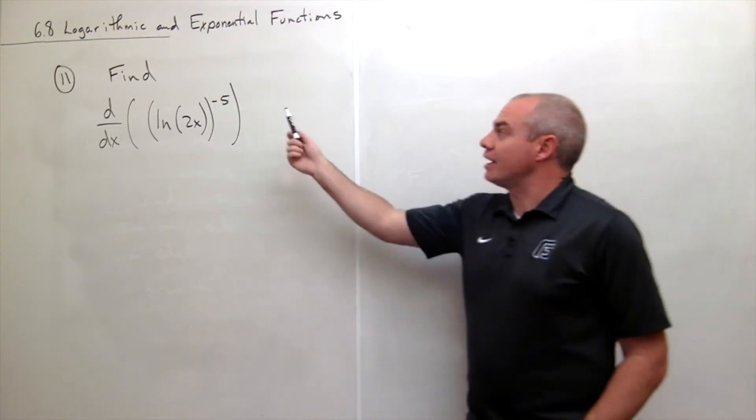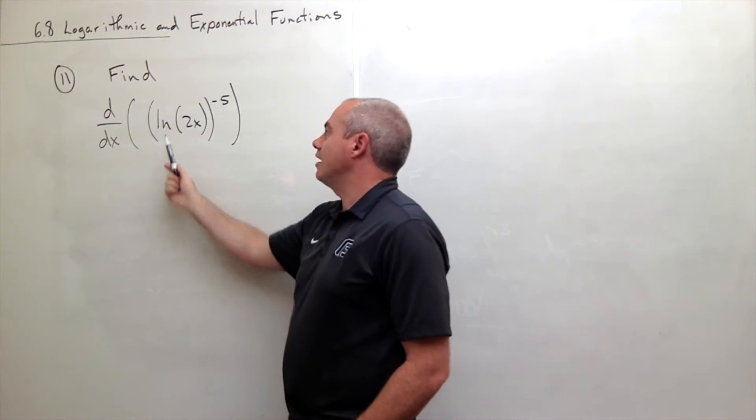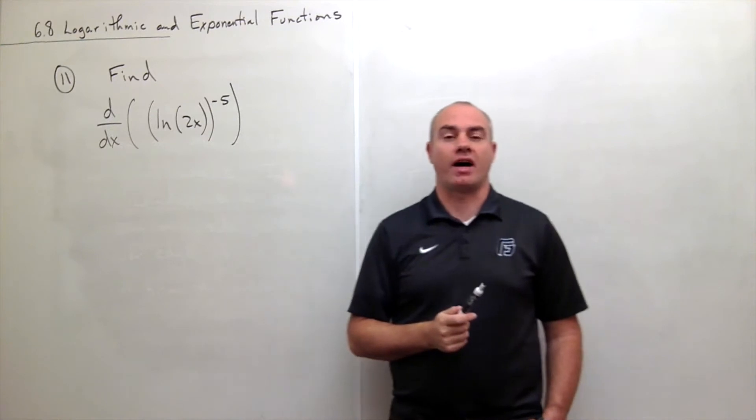11. Number 11 asks us to find the derivative with respect to x of ln(2x) raised to the power minus 5.